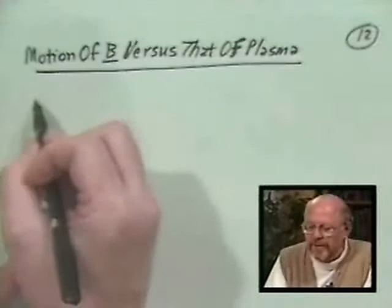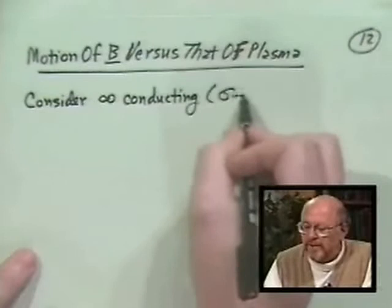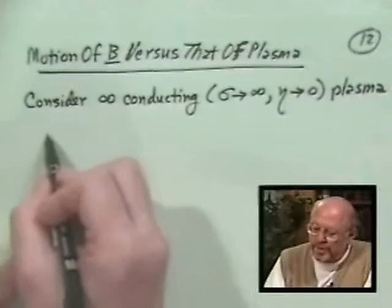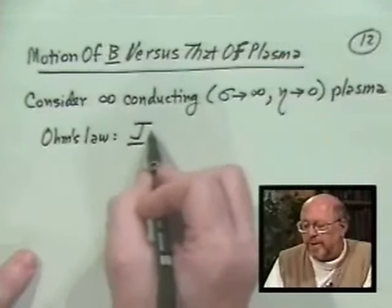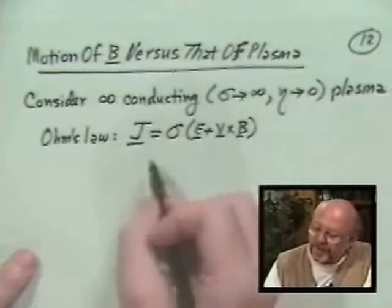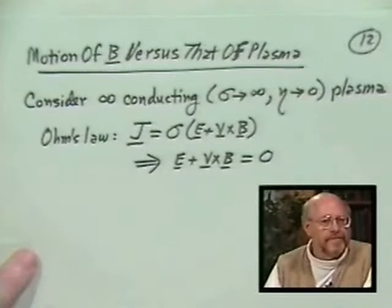What I want to discuss finally here is the motion of the magnetic field versus that of the plasma. Now first, what we want to do is consider an infinitely conducting plasma, electrically. That means sigma goes to infinity, eta goes to zero. Then our Ohm's law becomes that the current is equal to sigma E plus V cross B. In fact, in the limit that the conductivity goes to infinity, what this goes to is that E plus V cross B is equal to zero.